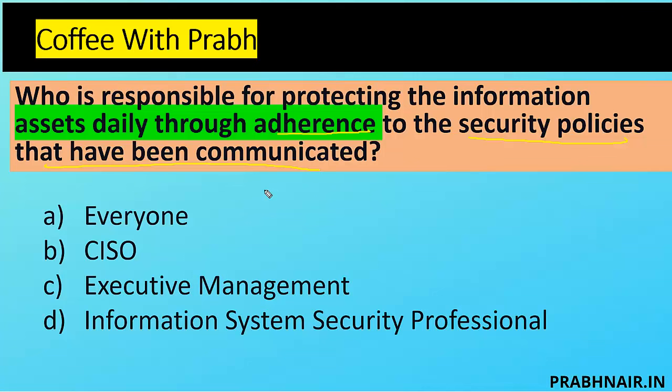Executive management is also accountable for security — there's a thin line difference between the CISO and executive management. CISO is accountable for implementing information security, whereas executive management is ultimately accountable for security. But the question is not talking about ultimate accountability. They just said who is responsible for protecting information assets through adherence to the security policy, meaning whatever is mentioned in the policy, according to that we need to protect. Directly or indirectly they are all related to security.